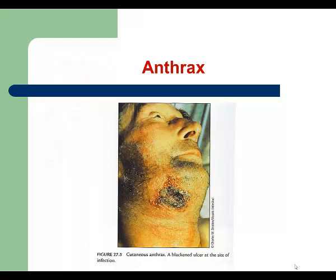On this slide, you see a picture of cutaneous anthrax — this is what we call the blackened crater, when the lesion goes deeper into the tissues and becomes larger. The reason for this is that Bacillus anthracis can produce very powerful toxins, so the causative agent of the tissue damage is the toxins produced by Bacillus anthracis.